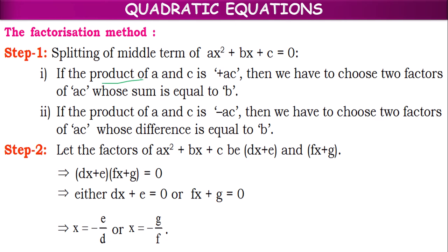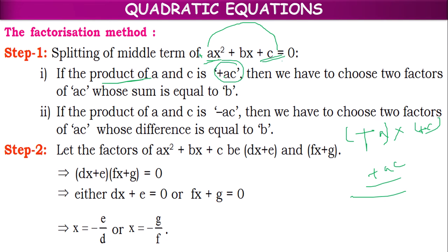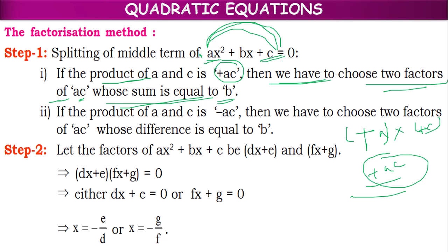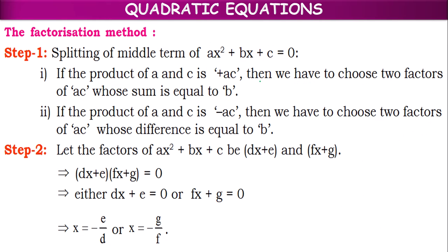For that, what we have to do: the product of the X² coefficient and the constant — that product we have to take. Here A is positive and C is positive, so A × C = AC. We are getting the product AC if we multiply the X² coefficient and constant. We have to choose two factors of AC whose sum is equal to B. We have to convert AC into two factors whose sum equals the middle term B.